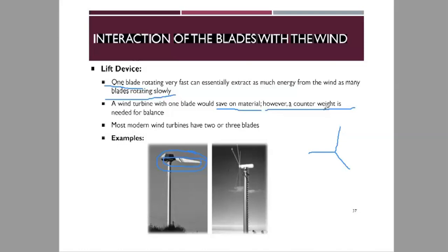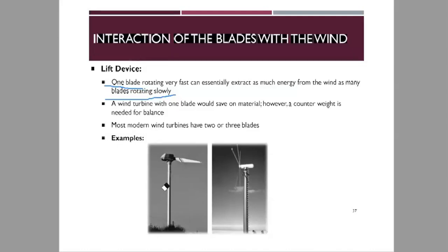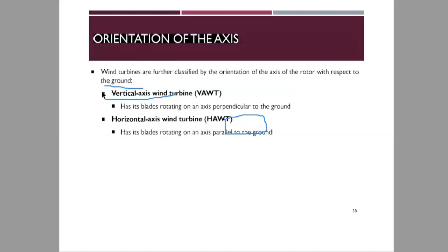You would need only one third of the material used for a three-blade turbine for a single-blade turbine, saving on material. However, you would need a counterweight to ensure proper balance and prevent the turbine from breaking apart. Most modern wind turbines have two or three blades, as an even number of blades provides better balance.